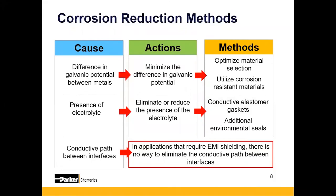Why shouldn't you just powder coat your entire box and be done with it? While removing that conductive path between the two interfaces would absolutely help minimize galvanic corrosion, unfortunately it is the nature of an EMI gasket to cause a conductive path between those two interfaces. In order to meet EMI shielding requirements, it would be almost impossible to eliminate the conductive path.